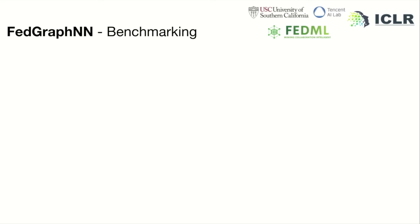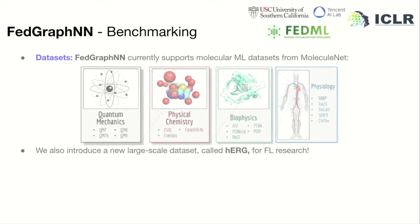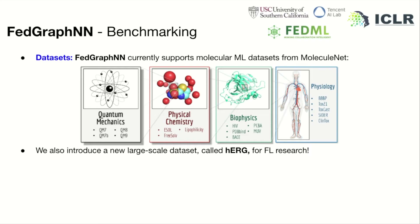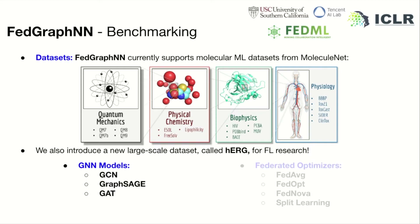Next, we provide what datasets and methods FedGraphNN currently has. For datasets, we currently support MoleculeNet datasets and a new large-scale dataset called HERC. For GNN models, users can choose between GCN, GraphSage, and GATT. For federated optimizers, users can utilize all available optimizers in FedML. Here, we list some of those.